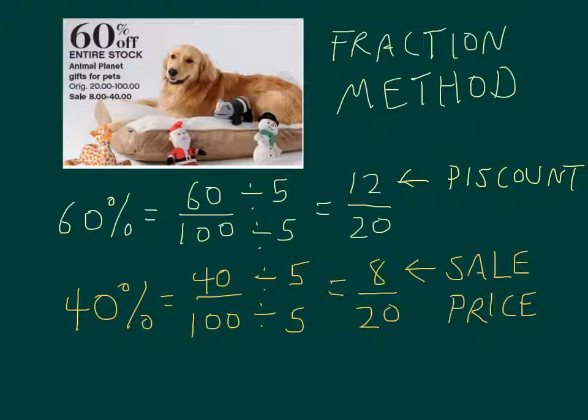So if we want to figure out why these ads are giving the numbers they do, we've got the percent, we've got the original price, and we can find the sale price either by finding sixty percent of our whole and saying we got a discount that much, or by saying we're going to be paying only forty percent. There's my whole, that's how much we're going to pay.